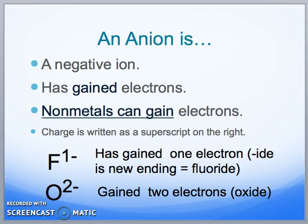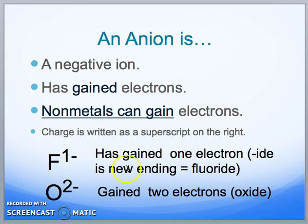Anions all have negative charges. They have a negative charge because they're gaining electrons. A majority of the time they are non-metals. Some examples are F⁻ and O²⁻. This is just for the sake of you seeing that we lose one electron. Another example would be O²⁻.